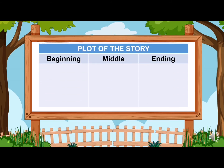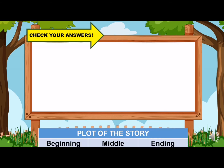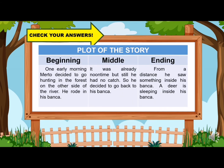Now it's your time to write the plot of the story. I will give you three minutes to do this. Good luck! Are you done? Now let us check your answer. This is the plot of the story. The beginning: One early morning, Merto decided to go hunting in the forest on the other side of the river. He rode in his banka. Then, the middle plot: It was already noontime, but still he had no catch, so he decided to go back to his banka. And the ending plot: From a distance, he saw something inside his banka — a deer is sleeping in his banka. Did you get all your answers right? Very good! Congratulations, kids! You can now determine the elements of a story.